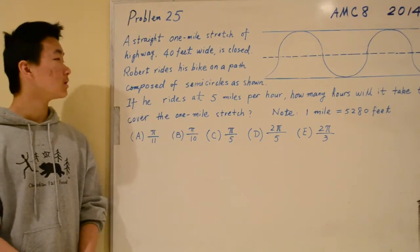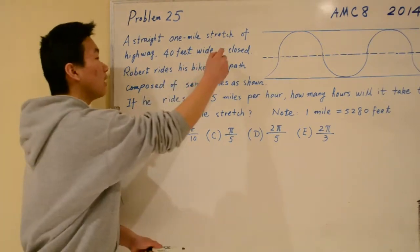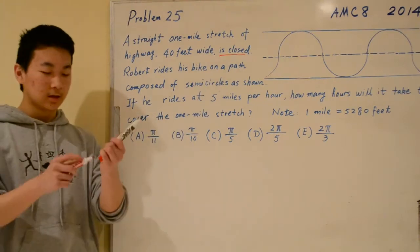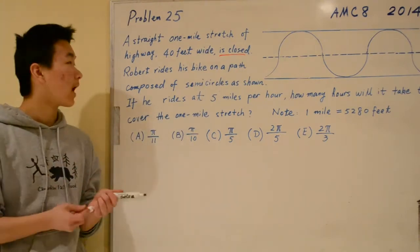If you are curious, the problem says that the highway is closed because it is illegal for bikers to be on the highway otherwise.